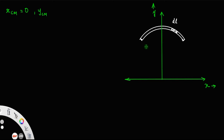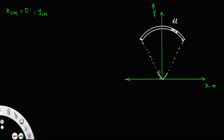Let alpha be the angle subtended by the arc at the origin. Since the arc is symmetric about the y-axis, the arc spans from minus alpha by 2 on one side to alpha by 2 on the other side, so the total angle is alpha.